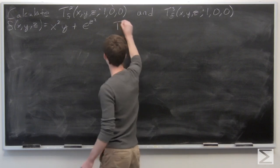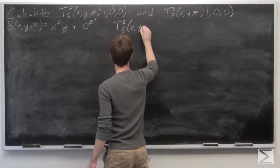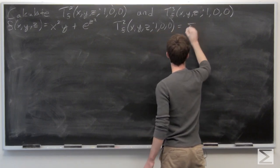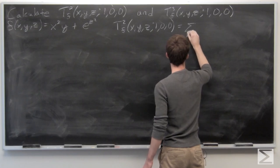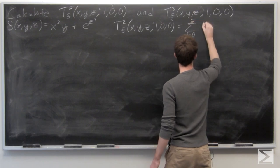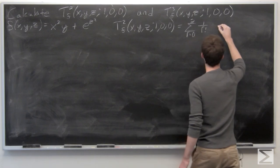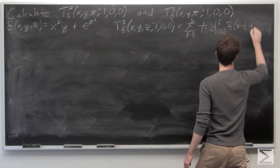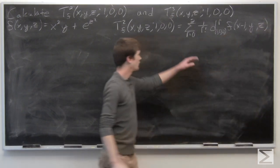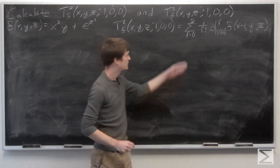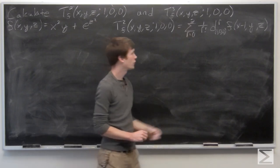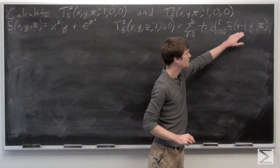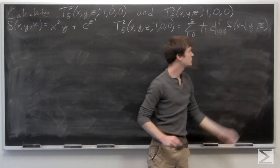For our second order Taylor polynomial, we know that it is the sum from r equals 0 to 2 of 1 over r factorial times the rth total derivative of f at the point (1, 0, 0) with respect to (x minus 1), y, and z, since we're expanding around (1, 0, 0).